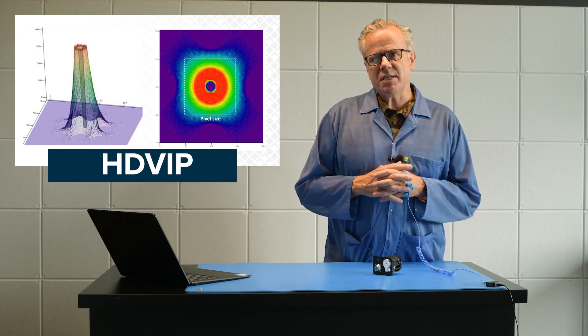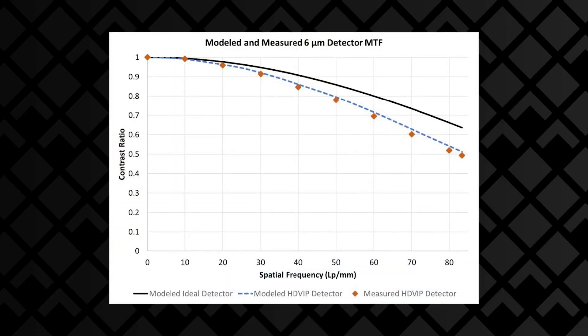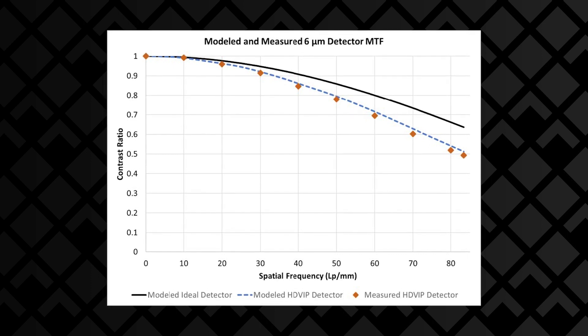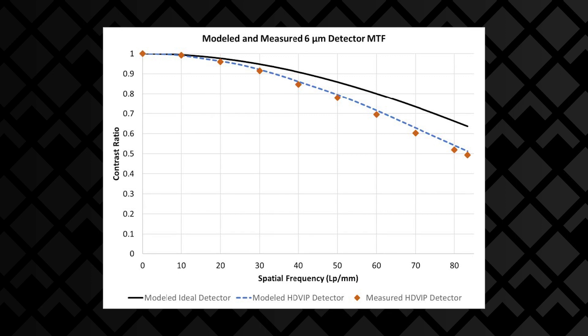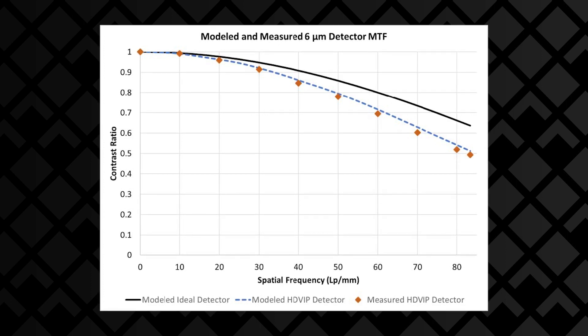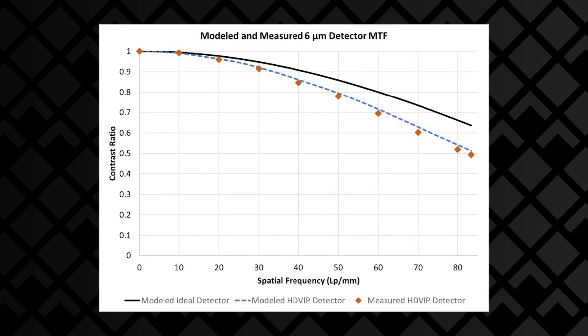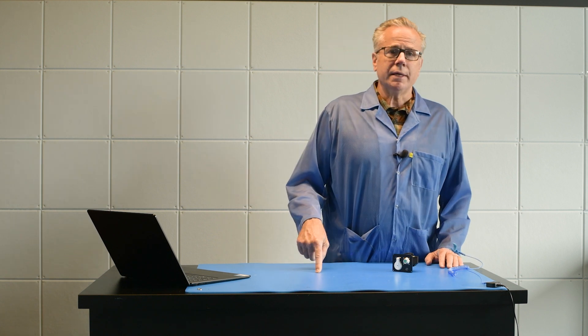The sensor is based upon DRS's HD VIP technology. HD VIP stands for High Density Vertically Integrated Photo Detector. This is a graph of the modeled ideal detector. You can see on the graph the solid black line is the perfect 6 micron sensor. The dotted blue line is what we would expect with the HD VIP architecture and the pixel spacing and the size of the diodes, the collection region. The orange triangles are the actual measured results. The measured results are almost overlaying the modeled HD VIP detector. Excellent MTF performance at the sensor.